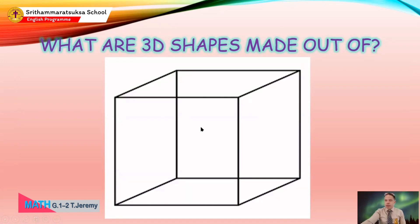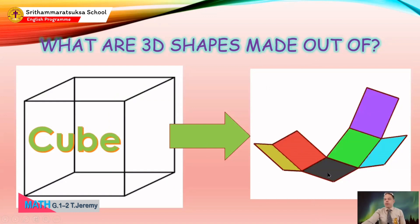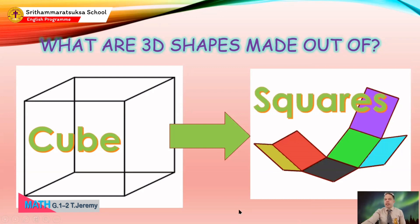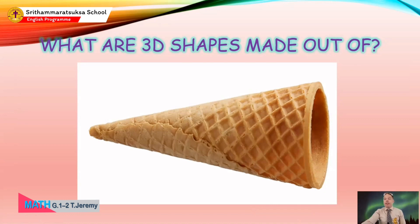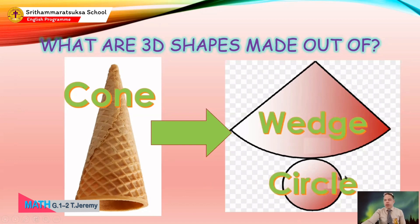What about this one? Do you remember? Right, this is a cube — and do you see what shapes it's made out of? A cube is made out of one, two, three, four, five, six squares. What is this one called again? That's right, it's a cone. And what shapes is the cone made out of? A cone is made out of a circle and a wedge. It's not a triangle because it has a rounded bottom — it's called a wedge, like a piece of cheese.